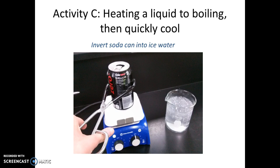To cool the gas quickly, prepare ice water in a large beaker. Invert the soda can into the ice water bath using beaker tongs — turning the can upside down into the ice water. This traps the hot water vapor in the can and cools it quickly. Write down your observations of the soda can. As you lift the can back out of the ice water bath, you'll notice that water gets sucked up into the can. You want to interpret that result as part of the post-lab for Activity C.